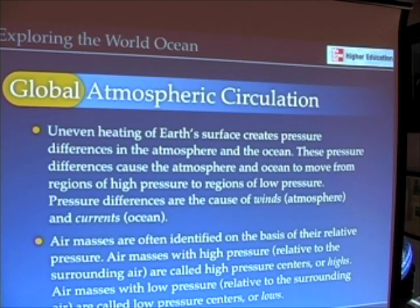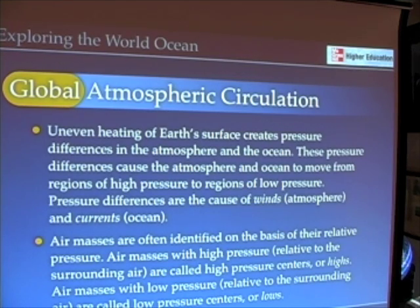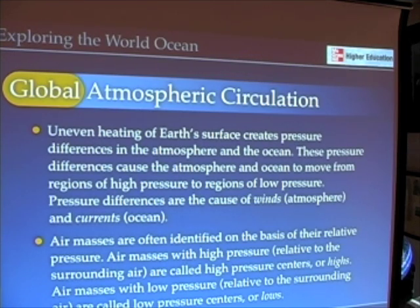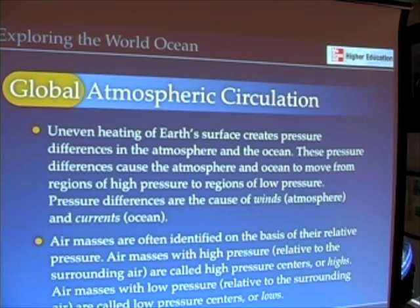It really is uneven heating of Earth's surface that creates the winds and creates the differences in pressure in both the atmosphere and the ocean. Air, water, and fluids in general move from regions of high pressure to regions of low pressure. The movements we see in the atmosphere are largely due to those pressure differences found across the surface of the Earth — anywhere in the atmosphere, pressure differences are going to cause motions of winds. These large-scale motions are what we call the global atmospheric circulation.